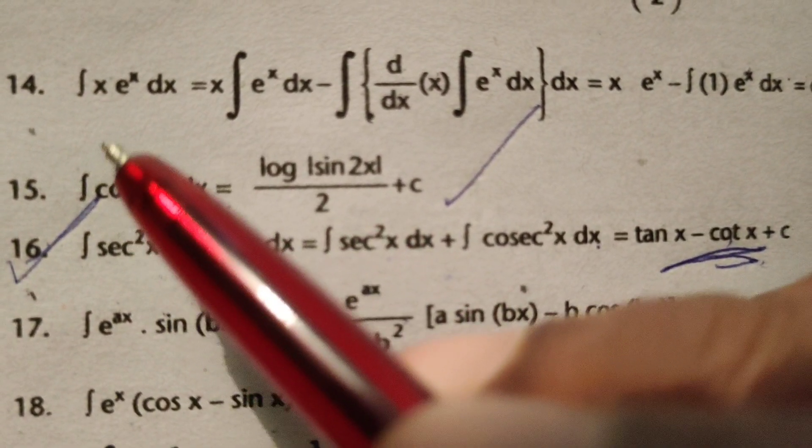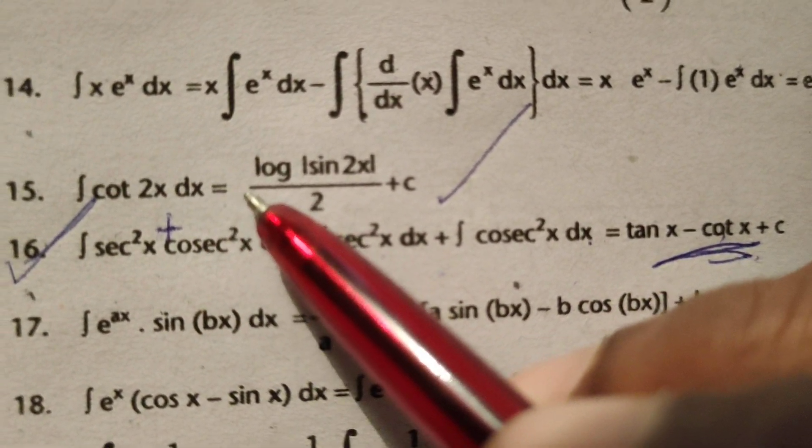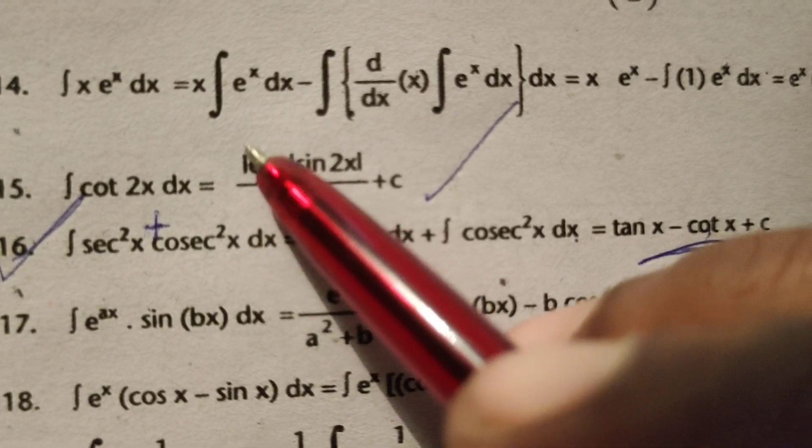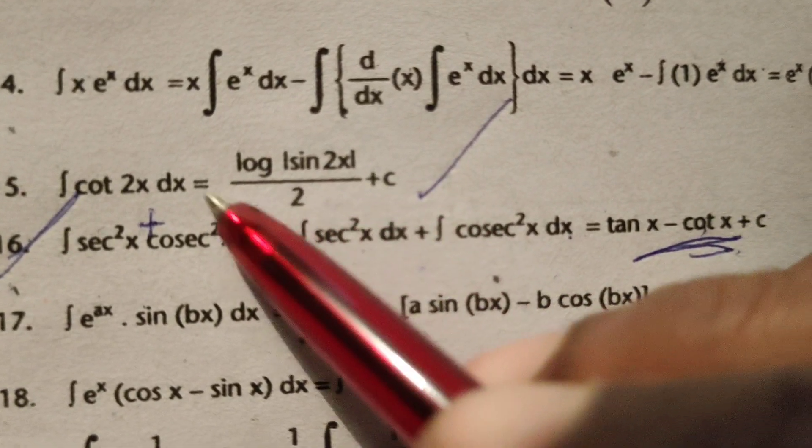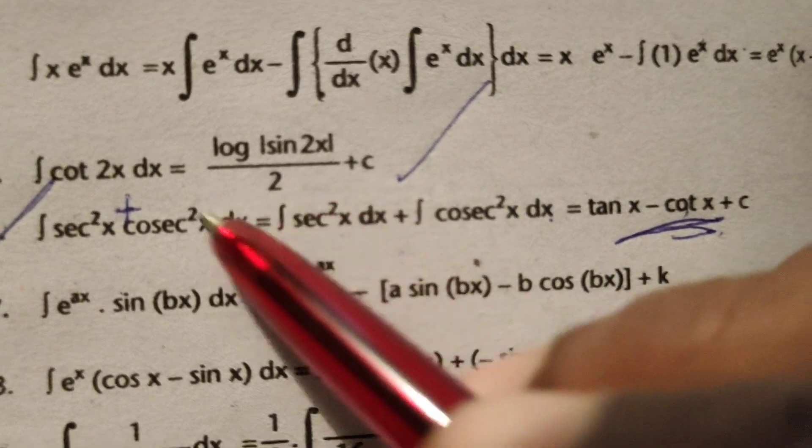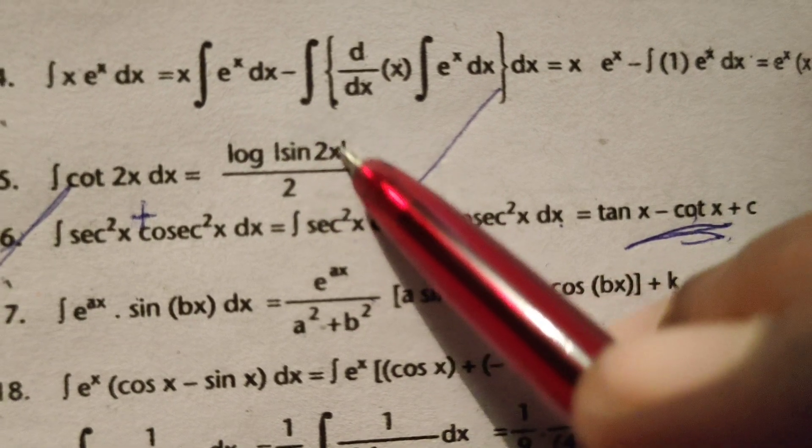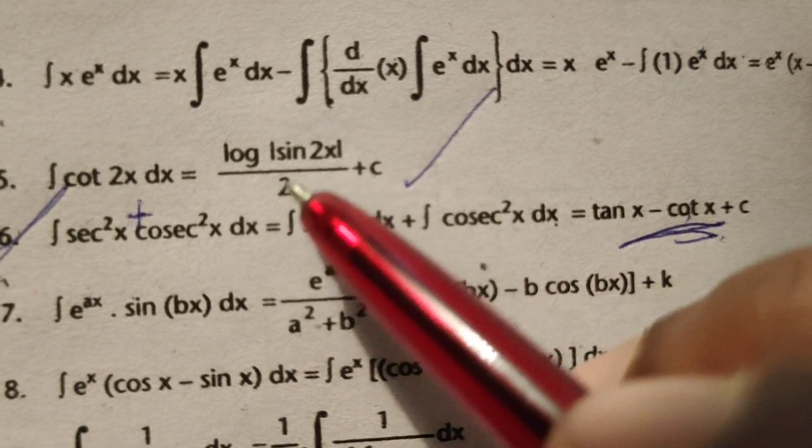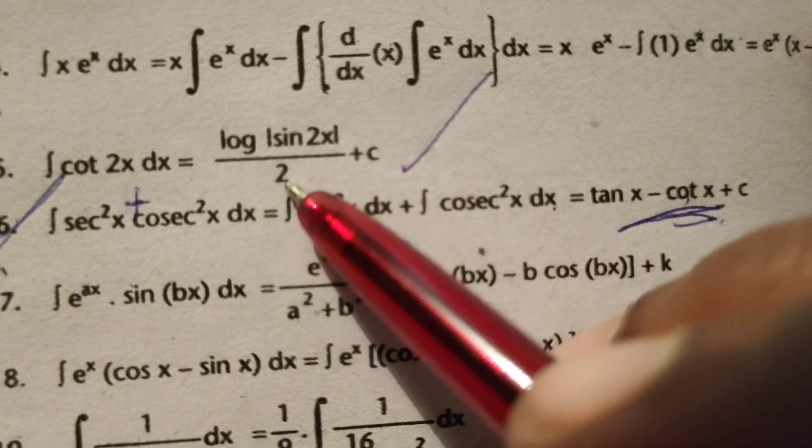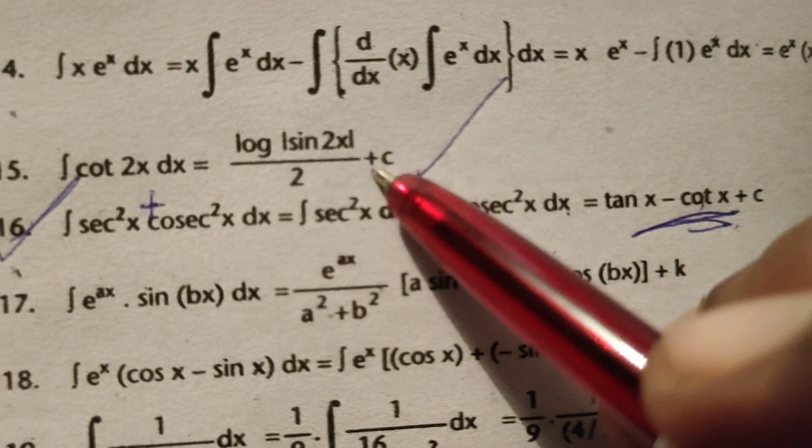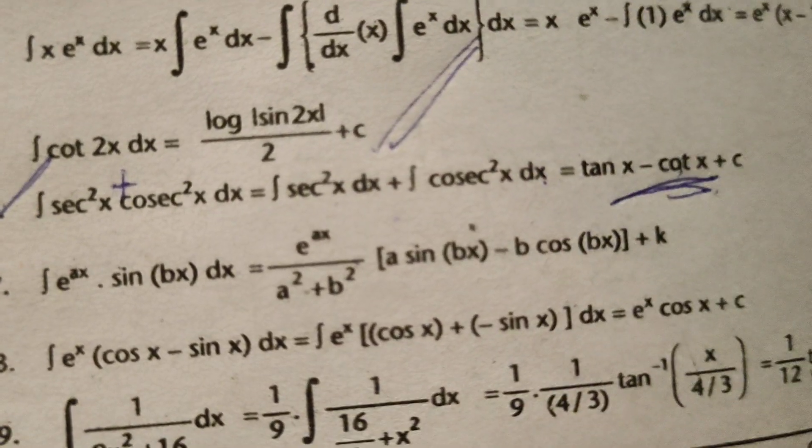Now integral of cot 2x dx equals to directly goes to the formula: log of modulus sin 2x by 2. I mean log of sin 2x, again 2x means 2. This is the integration here in the denominator after integrating, adding the constant, let's see.